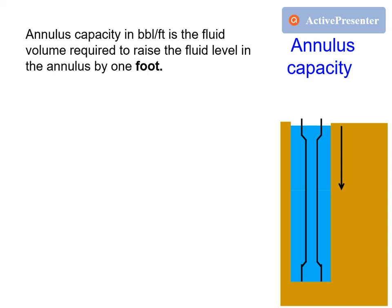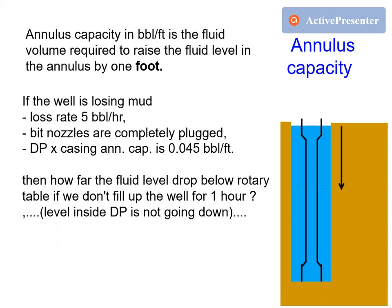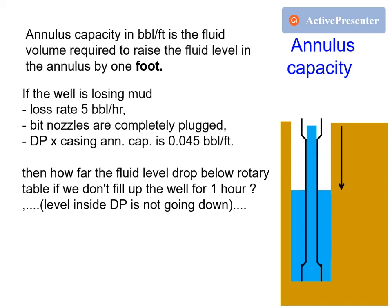Annulus capacity in barrels per foot is the fluid volume required to raise the annulus fluid level by 1 foot. If the well is losing mud at 5 barrels every hour, the bit nozzles are plugged, and annulus capacity is 0.045 barrels per foot, then for every hour the fluid level inside the annulus will drop by 5 divided by 0.045, equal to 111 feet.